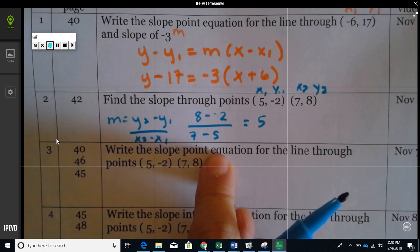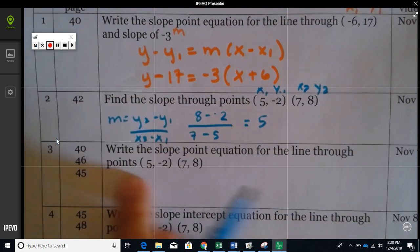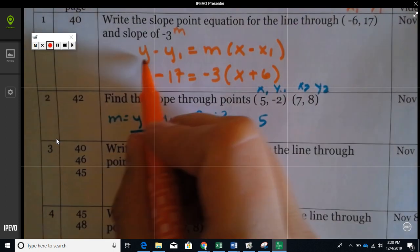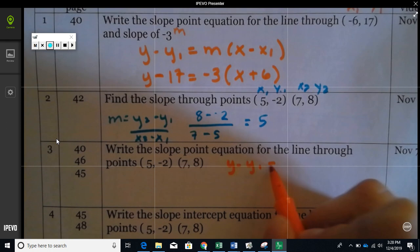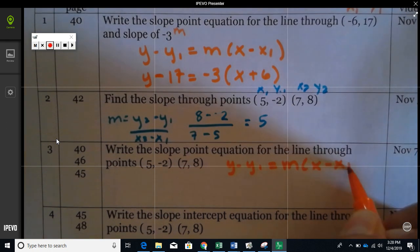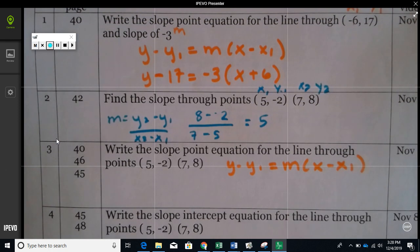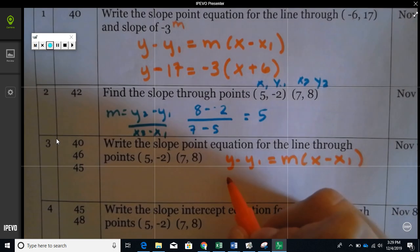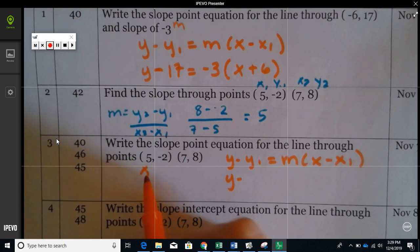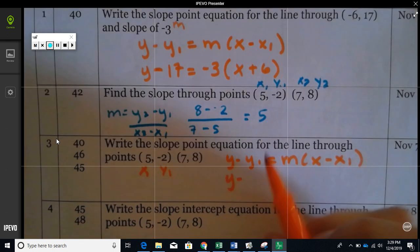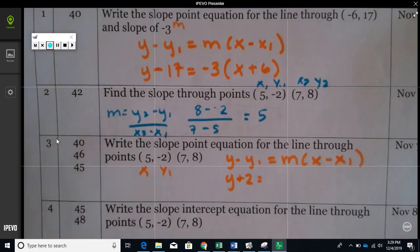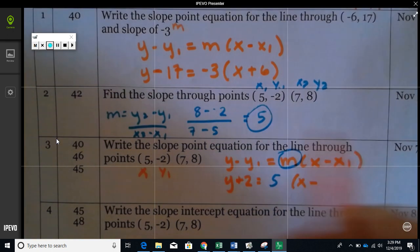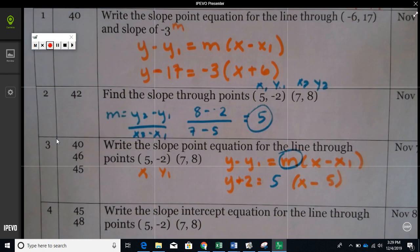On this problem we're not given the slope, so that's why we had to do this part first. We'll write the same formula: y minus y1 equals m times x minus x1. Y is always y. Pause it and see if you got it correct. Y minus, so y1 is this negative 2. Because it's negative, you're going to put plus 2. Your slope is 5, x minus x1. x1 is 5.